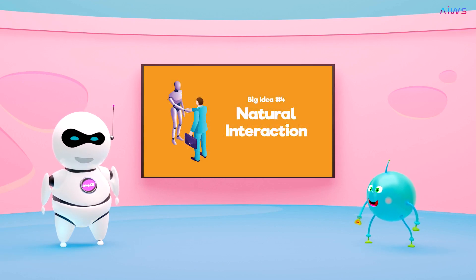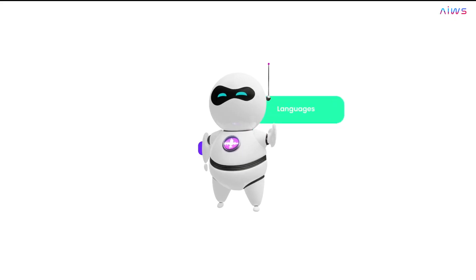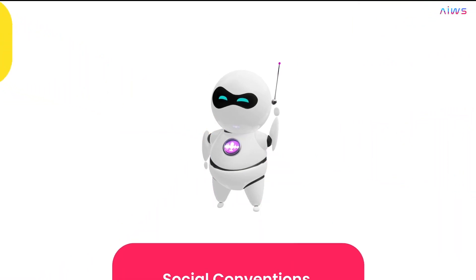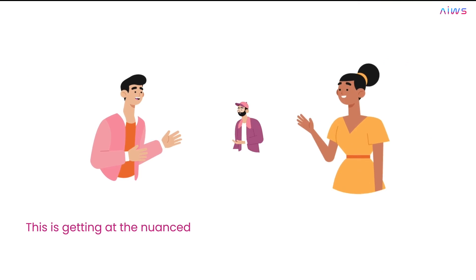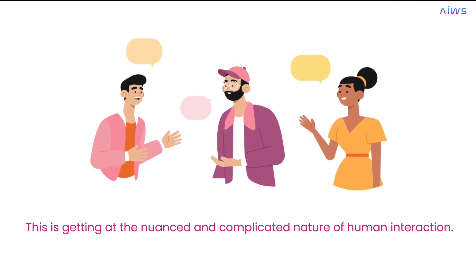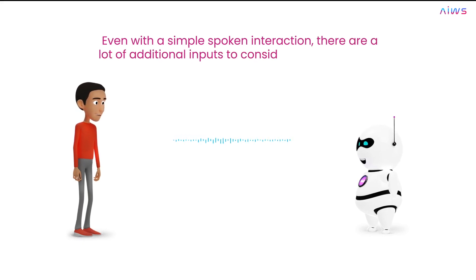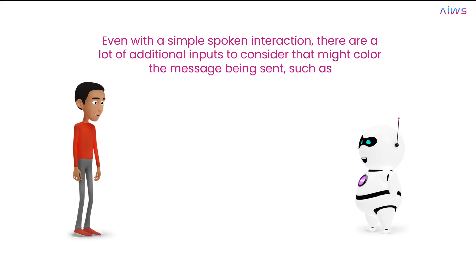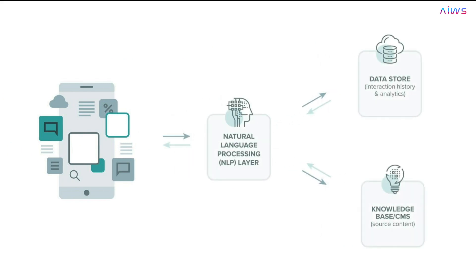The fourth big idea is natural interaction. AI programs and intelligent agents require many kinds of knowledge to interact naturally with humans. This is getting at the nuanced and complicated nature of human interaction. Even with a simple spoken interaction, there are a lot of additional inputs to consider that might color the message being sent, such as tone of voice, eye contact, or even posture. AI systems need to take into account many different kinds of information in order to interact as naturally as possible.